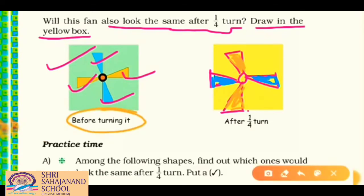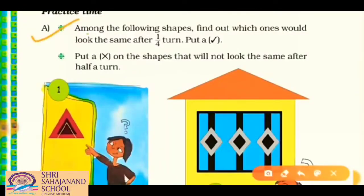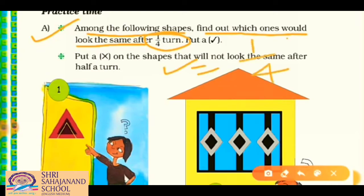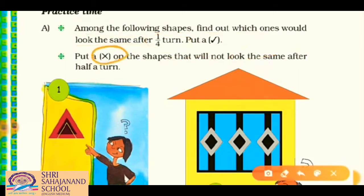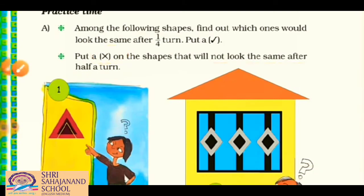Now we have practice time. Question A: among the following shapes, find out which ones would look the same after one fourth turn. Use a tick for one fourth turn if the shape looks the same, and a cross if the shape does not look the same after half turn.